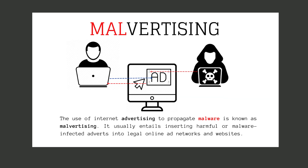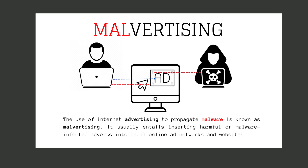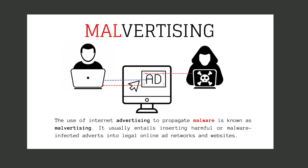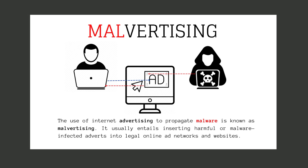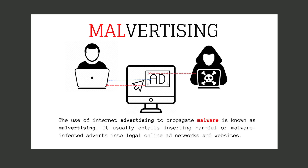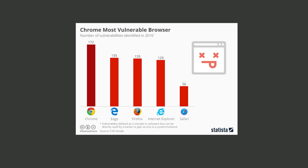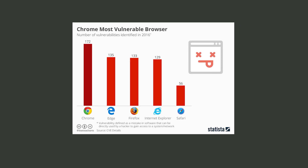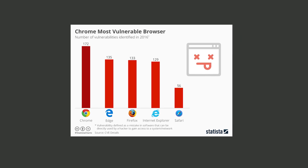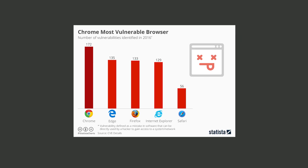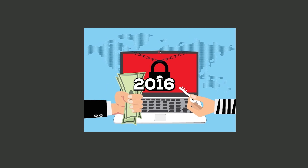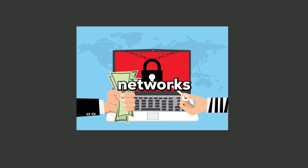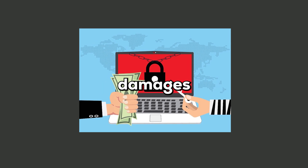Malvertising involves injecting malicious code into legitimate online advertisements, turning them into vectors for malware distribution without user consent. These ads exploit browser vulnerabilities and can infect your system simply by being displayed on trusted websites. Several ransomware campaigns in 2016 spread through compromised ad networks, causing millions of dollars in damages.